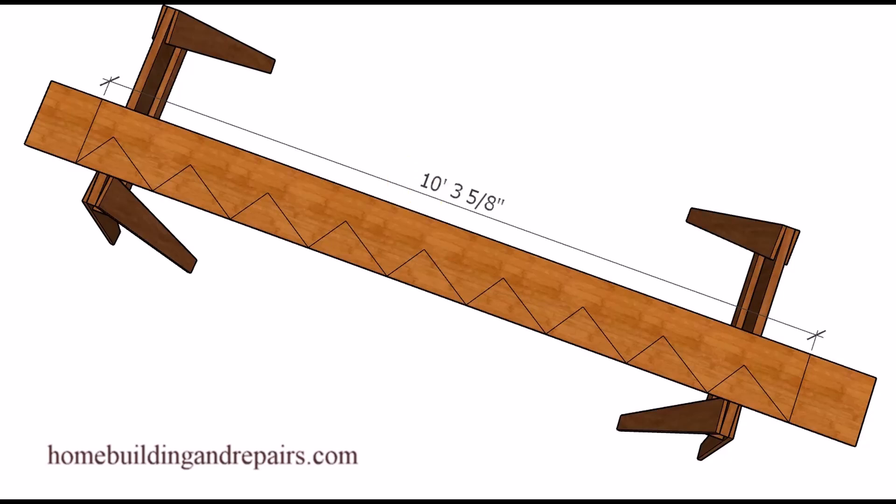Hopefully this never happens to you, but if you are having a problem with laying out your stringers while using precise measurements on your framing square and you're ending up with stringers that are a little too long or a little short, then the first thing I would suggest is to check the framing square to make sure that it isn't going to be the problem.